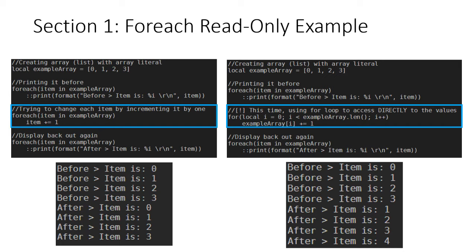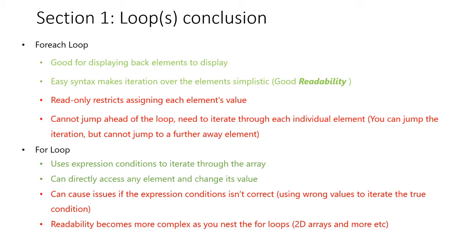You cannot assign a value using a for-each loop, as for-each loops are intended to display back information. A for-each loop is good for displaying back elements because of its easy syntax. The downside of a for-each loop is that it's read-only, which restricts assigning each element's value. You cannot jump ahead of the loop, so you need to iterate through each individual element. The for loop uses expression conditions to iterate through the array, and you can directly access any element and change its value, but this can cause issues if the expression condition isn't correct. Usability becomes more complex as you nest for loops, such as when using 2D arrays or more.